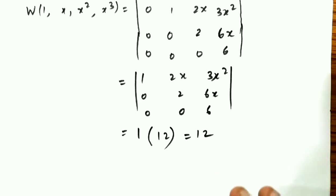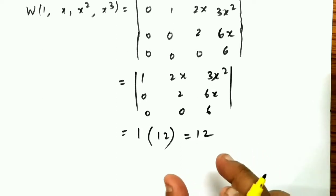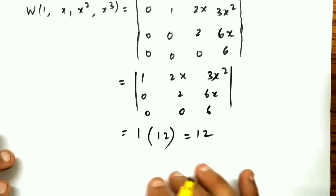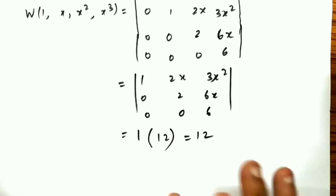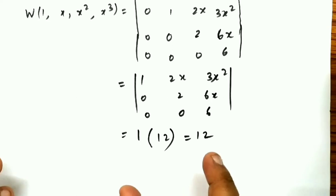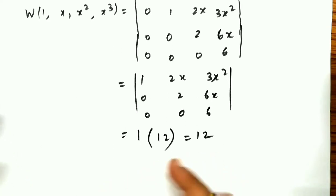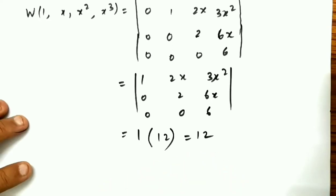In this way, we have found the Wronskian of 4 functions, 3 functions, and 2 functions. This is how we calculate the Wronskian for a given set of real functions.